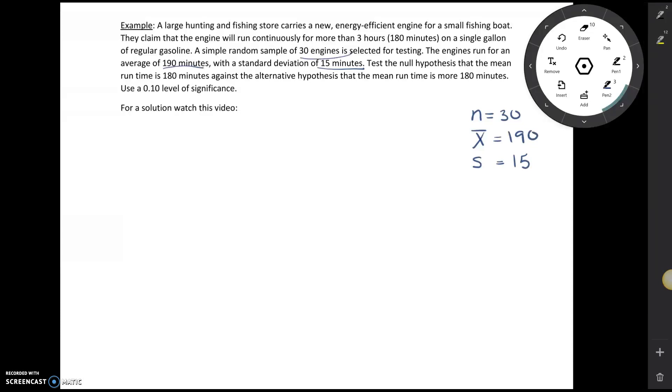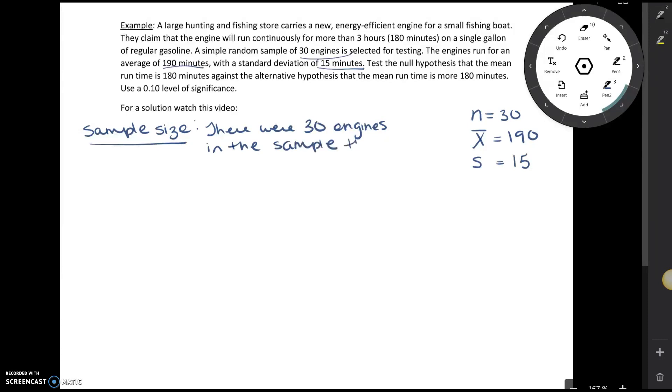So we've got the information we need, and we're going to go through each of the five steps. The first thing we're going to do is the sample size check. There were 30 engines in the sample. Therefore, the sample size requirement is met. This is because in order to satisfy the sample size requirement for our mean, we need at least 30. We've got 30 engines, so we're good to go. The sample size requirement is met since there are at least 30.